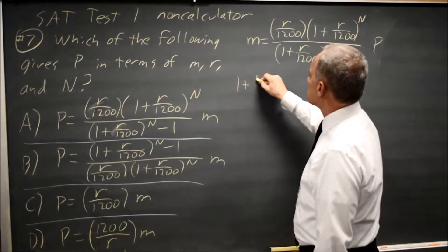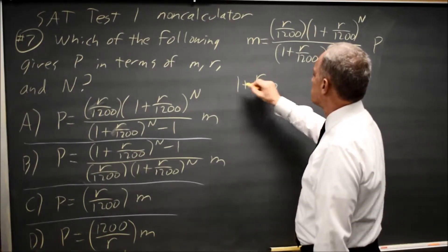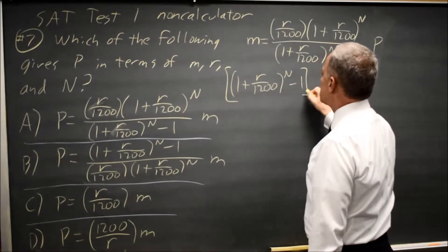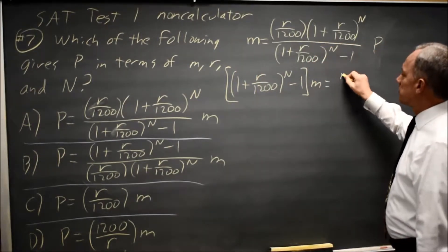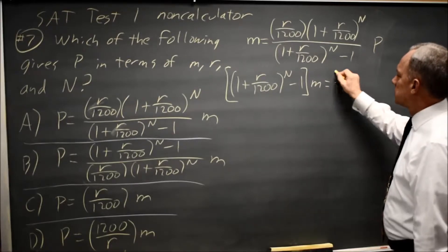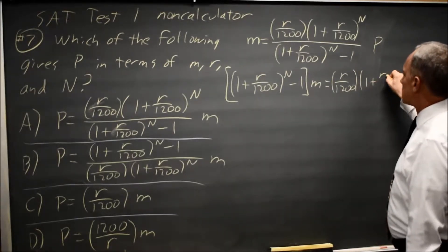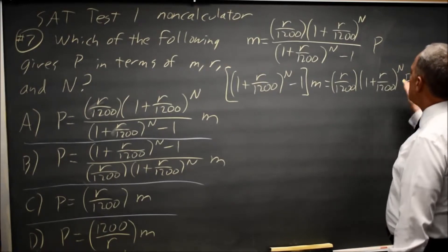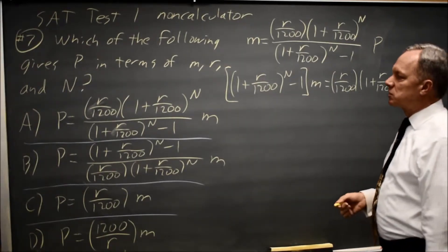which gives me 1 plus R over 1200 to the N minus 1, that entire quantity times M equals my old numerator, R over 1200, 1 plus R over 1200 to the N times P, and I'm trying to solve for P.